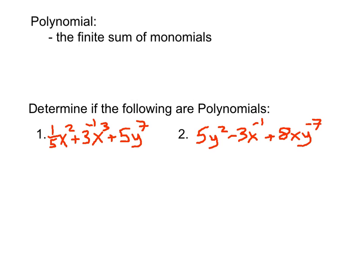The second term looks a little strange because we have three to the negative first power. You may say that's not a monomial because we can't have a negative one exponent — but remember, we can't have a negative exponent on a variable. We can have a negative exponent on a real number. Three to the negative first is just one over three, so that's okay. And then finally 5y to the seventh — that's fine too. So yes, this would be a polynomial.